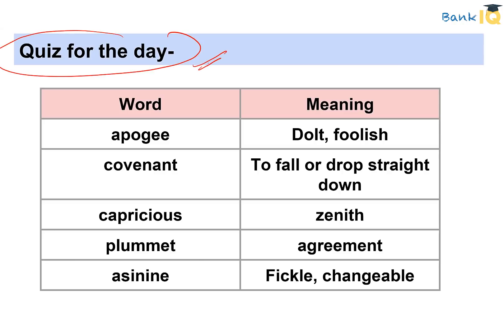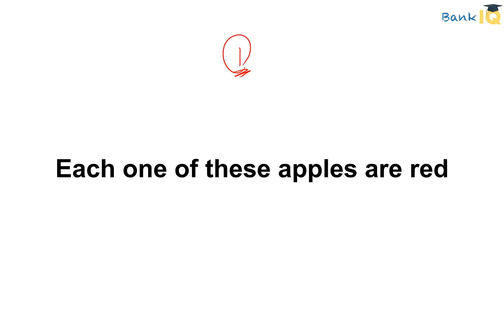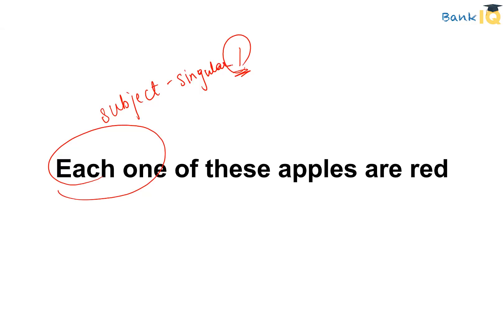We start with the first spotty error question: 'Each one of these apples are red.' We need to find the common error here. 'Each one' suggests that our subject is singular — it is not plural. Since the subject is singular and is not referring to all members of the set collectively, 'are' is wrong. 'Is' will be correct. 'Each one of these apples is red' — that will be the correct usage.